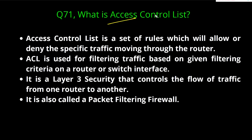Question one: What is ACL? ACL is just a set of rules which allow or deny specific traffic moving through a router or switch. ACL is used to filter traffic based on given filtering criteria on a router or switch interface. Whatever instruction you write on the router, according to that criteria the router will take a filtering decision.